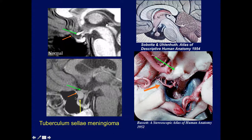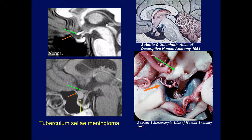When you have a tumor like the tuberculum sellae meningioma, it's going to deform and affect the chiasm because there's just no room here. Here's the normal chiasm — just a few millimeters from the tuberculum sellae in life.